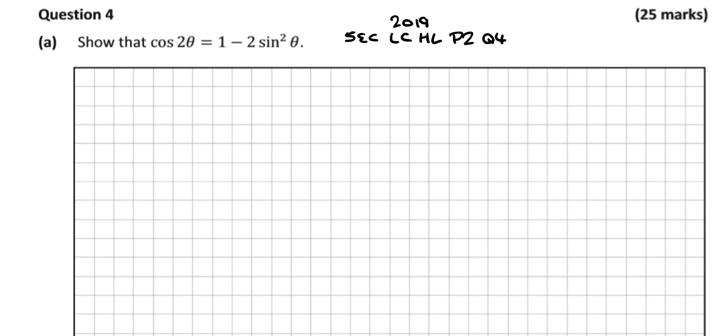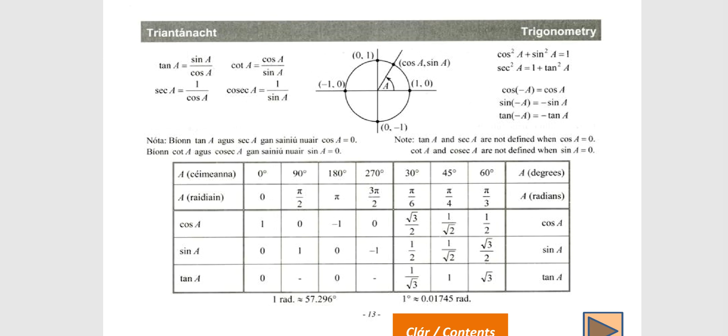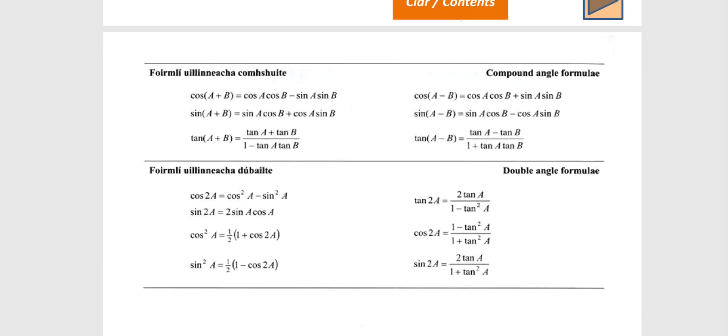A nice little identity to begin with. You could either start with manipulating the sine squared θ or manipulating the cos 2θ and try and make it look like the right hand side. I'd probably start working with the cos 2θ. Go into your log tables and we're working with trigonometry, so you'll be looking at page 13 onwards. We're looking for cos 2θ.